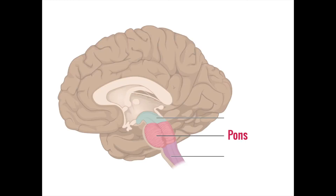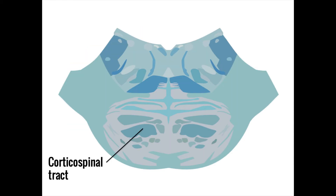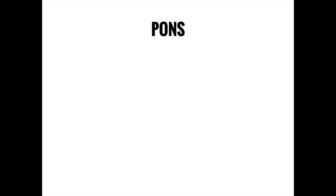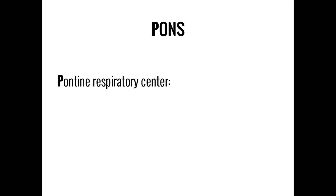Moving down from the midbrain, we next hit the pons. Within the pons lies the continuation of the tracts from the midbrain, including the corticospinal tract and various sensory fibers going to the parietal lobe. The pons also contains unique structures that perform vital functions. P in PONS is for pneumos: the pons contains the pontine respiratory center, one of three areas — the other two being in the medulla — that help regulate the rate and depth of breathing.